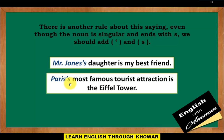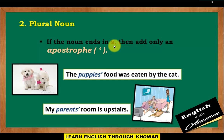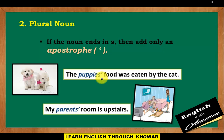Rule: plural noun — if the noun ends in S, then add only an apostrophe. Example sentences: 'The puppies' food was eaten by the cat,' and 'My parents' room is upstairs.'